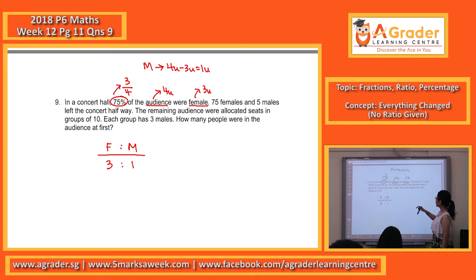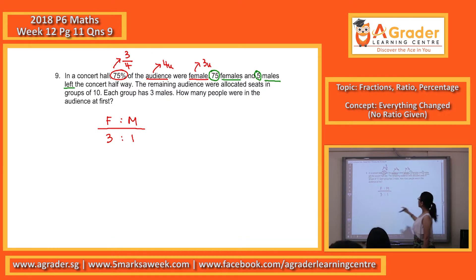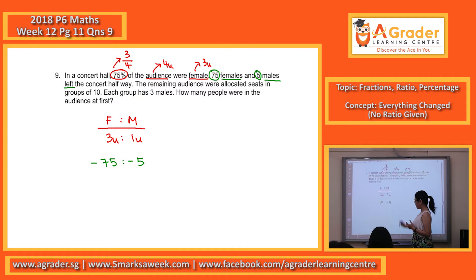Now we look at the next part. 75 females and 5 males left the concert halfway. So left means it's a decrease. So minus 75 for the female and minus 5 for the male. And to differentiate again, I will put in the U so that we will not mix up.